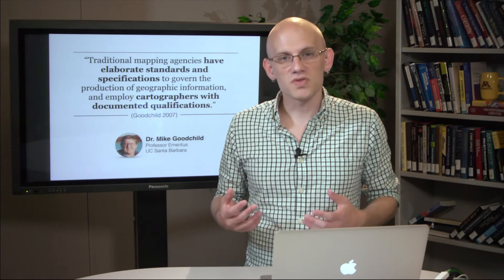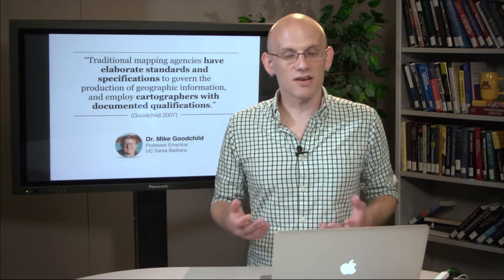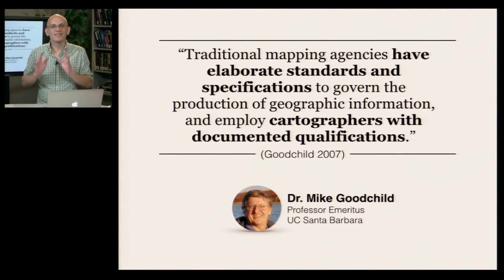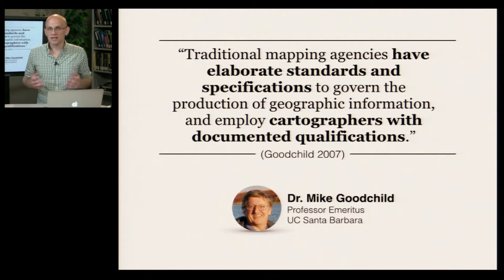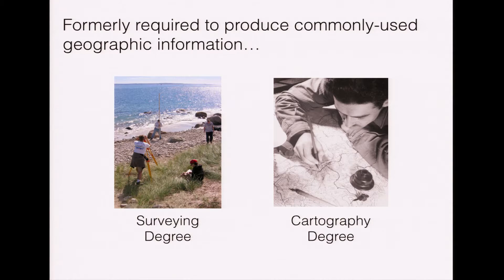This information would have been produced with, in the words of the famous geographer Dr. Michael Goodchild, elaborate standards and specifications, and by people with documented qualifications. These qualifications might have included a degree, possibly a graduate degree, in surveying or cartography, or a related discipline like geography. However, beginning around the mid-2000s, a dramatic change began to occur in the world of geographic information production and dissemination. Namely, people started to create their own geographic information.